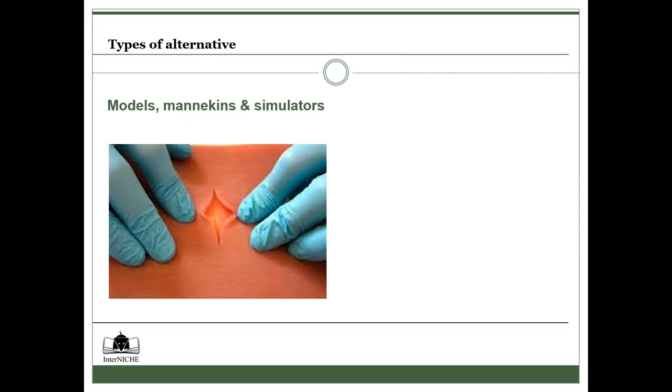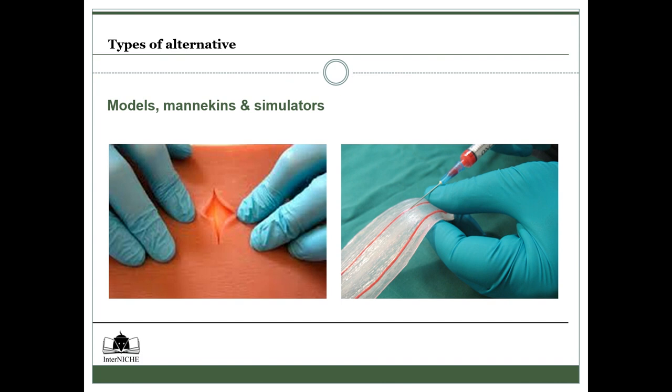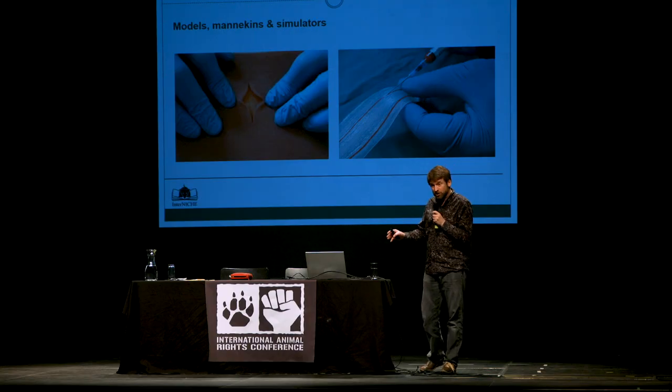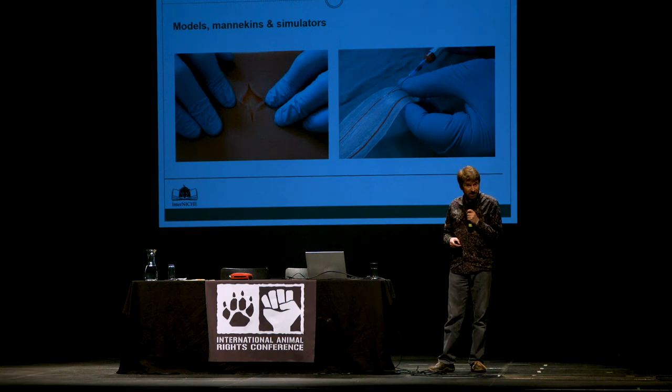This is a suture pad from above — this is what the trainee will see. This is a rabbit ear, so you can practice taking injections, giving injections, and taking blood. Some of these alternatives were developed for laboratory animal training. We still promote them because if you can get replacements even within laboratory animal training, then that replacement has been achieved. You've also exposed those future animal researchers and technicians to alternatives — they'll be more open-minded and aware of the range of alternatives that exist.